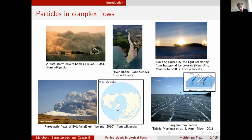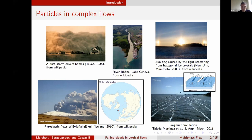Sometimes things are different. On the right here, this is called Langmuir circulation — the cellular structure observed on the ocean due to wind — which instead of dispersing particles, creates a focusing effect: foam or plankton concentrated at certain locations. So what we are really interested in is a collection of particles evolving in a very complex flow under gravity. What will happen to this cloud? Will it maintain a cohesive entity, will it disperse, will it be focused? We are interested in the interaction between particles and the flow, but also between the particles themselves — the collective effect and the interplay of the whole system.